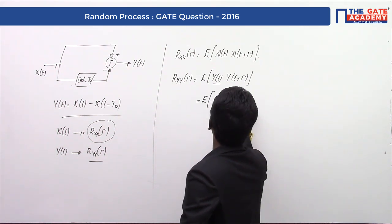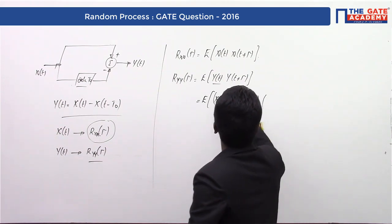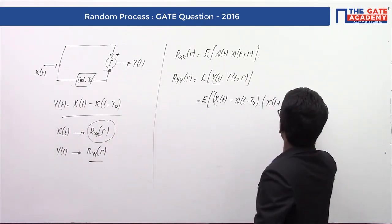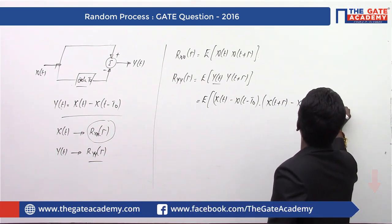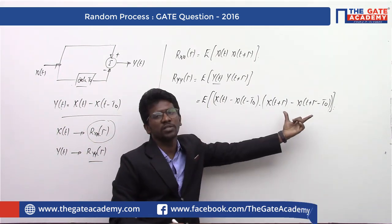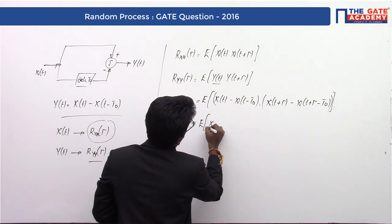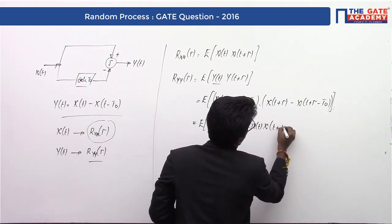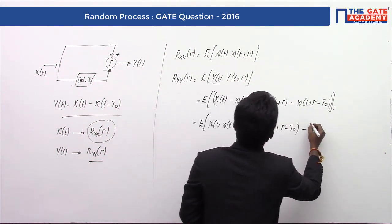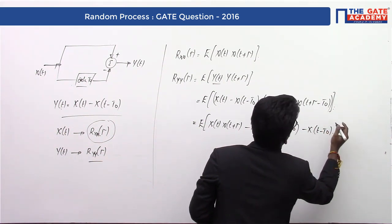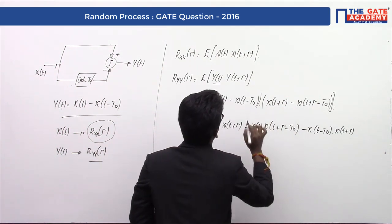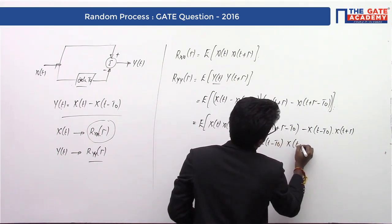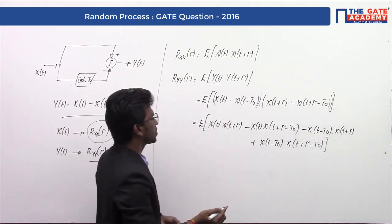If you substitute y(t) — which is x(t) minus x(t - T₀) — into the autocorrelation formula, you get: E[(x(t) - x(t - T₀)) · (x(t + τ) - x(t + τ - T₀))]. This is in the form (a - b)(c - d). Multiplying out: the first term is x(t)·x(t + τ), the second is minus x(t)·x(t + τ - T₀), and then minus x(t - T₀)·x(t + τ).